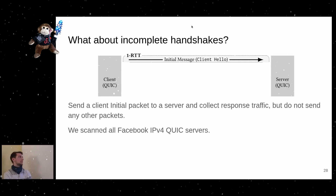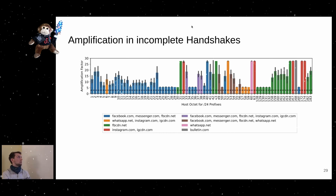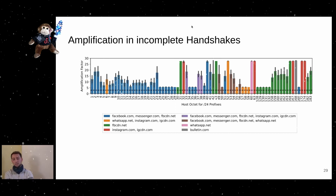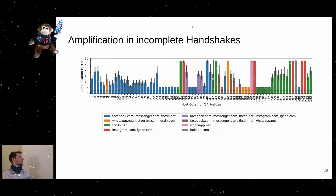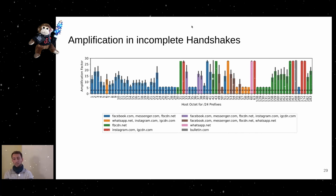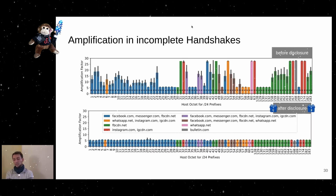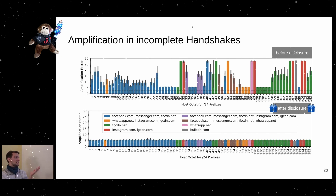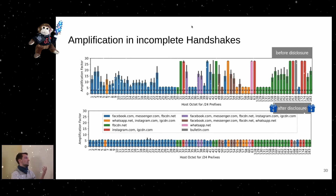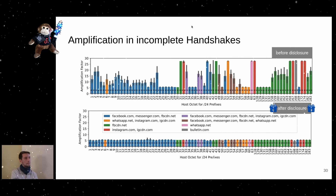We checked this with all Facebook IP address servers. Grouping different Facebook services, Instagram and WhatsApp show high amplification factors well above the three-times limit. We contacted Facebook, they acknowledged the problem, and later they fixed it — kind of. Now they exceed the limit at about five times, still above the specified limit but closer.